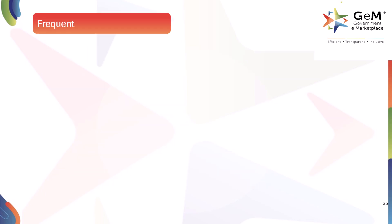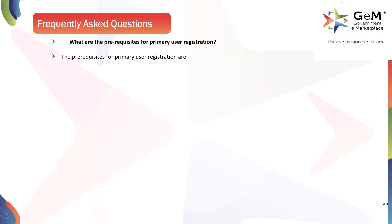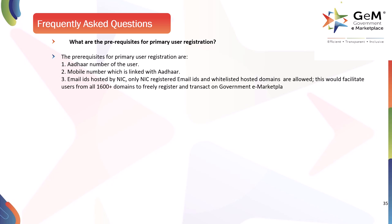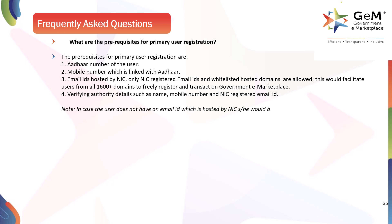Here are the frequently asked questions. What are the prerequisites for primary user registration? The prerequisites are: 1. Aadhaar number of the user. 2. Mobile number linked with Aadhaar. 3. Email IDs hosted by NIC — only NIC registered email IDs and whitelisted hosted domains are allowed, facilitating users from all 1600+ domains to register and transact on Government eMarketplace. 4. Verifying authority details such as name, mobile number, and NIC registered email ID.